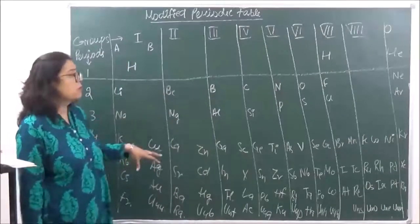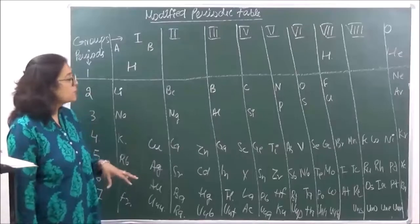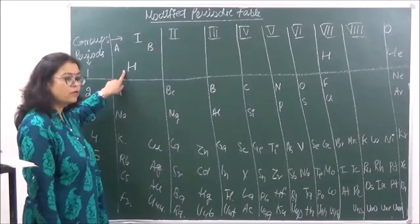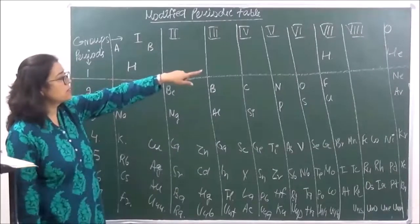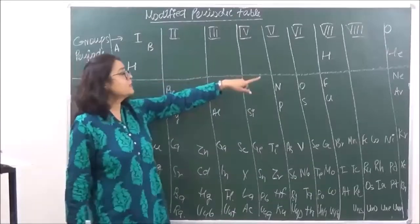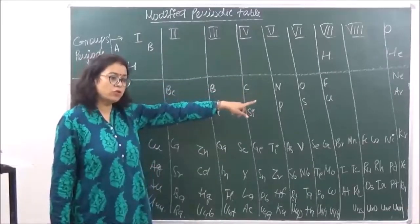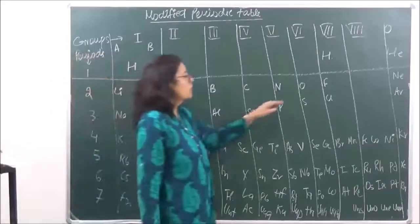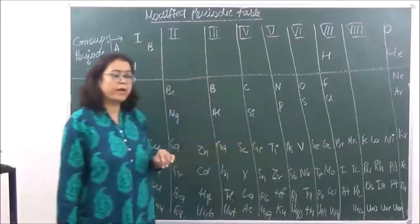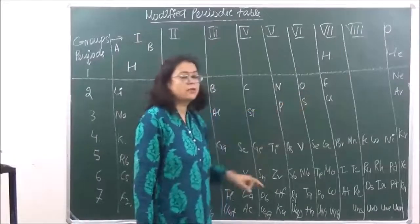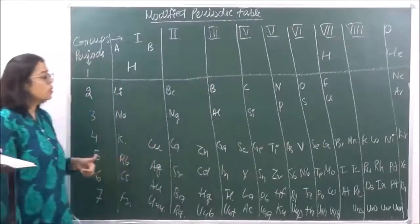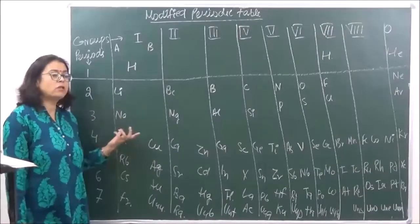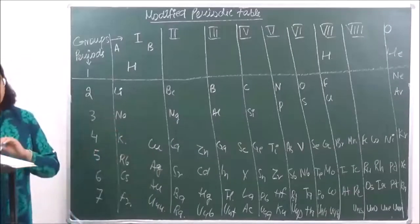The modern periodic table, which was based on atomic numbers, resolved this issue. Since isotopes have the same atomic number, only one place is given for each element. For example, hydrogen is given only one place, carbon is given only one place, and oxygen — which has two isotopes, O-16 and O-18 — is also given only one place in the periodic table. So the concept of isotopes and the positioning of atoms were very well explained on the basis of the modern periodic table.